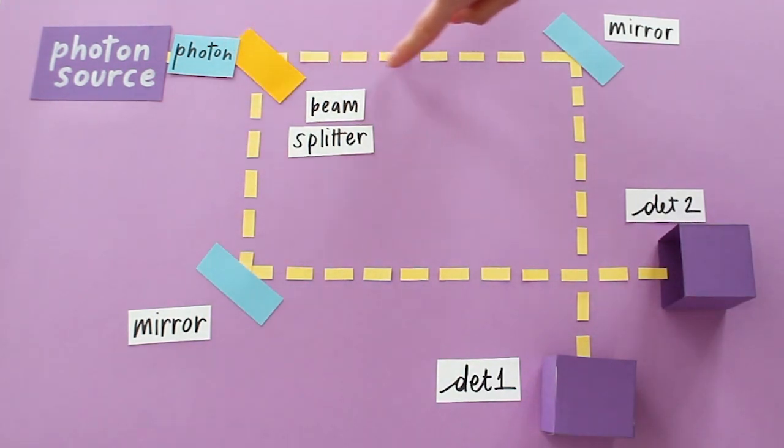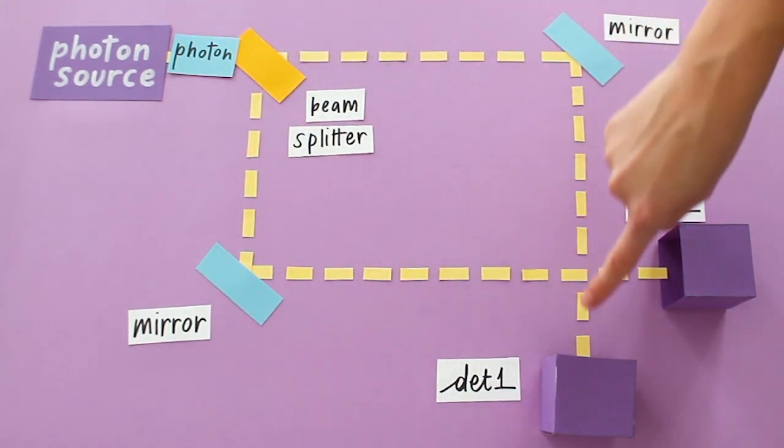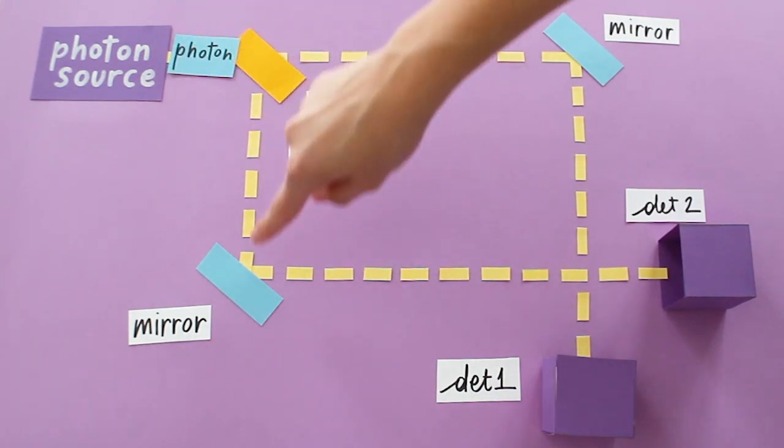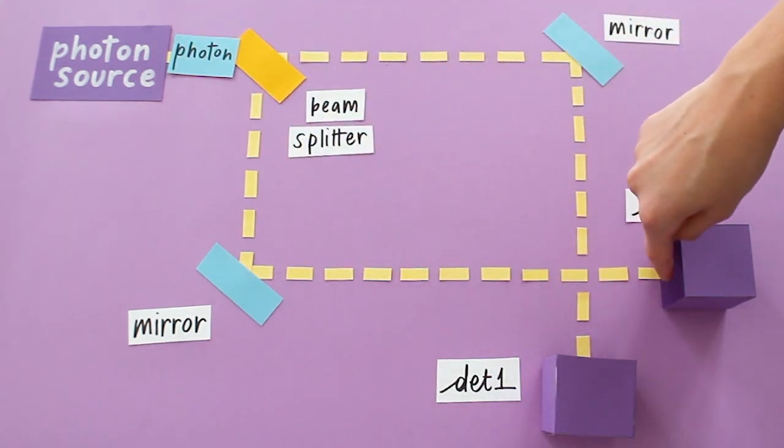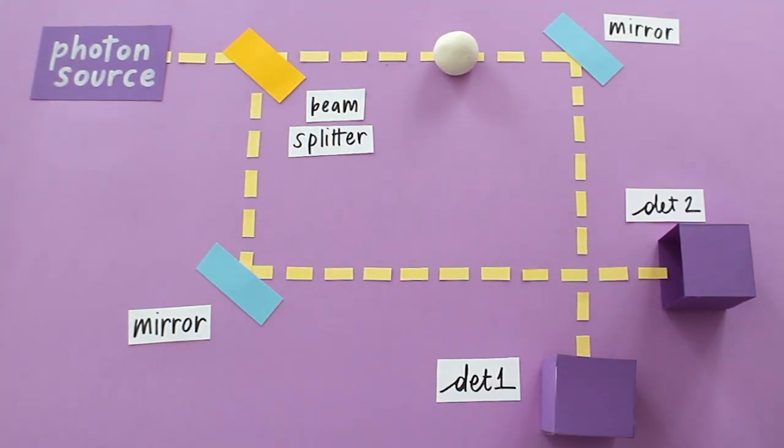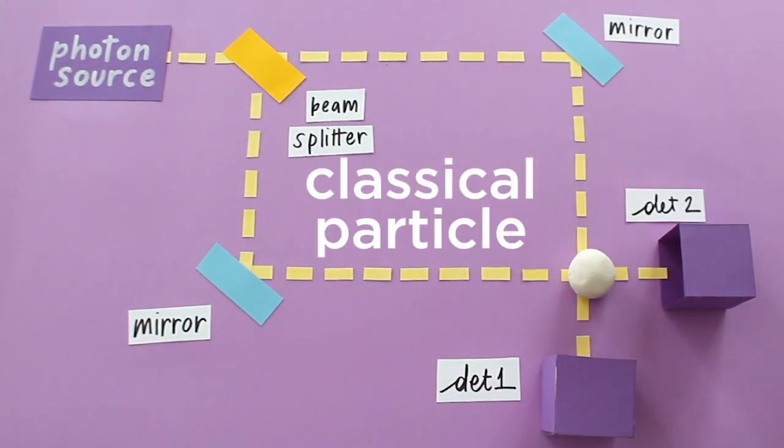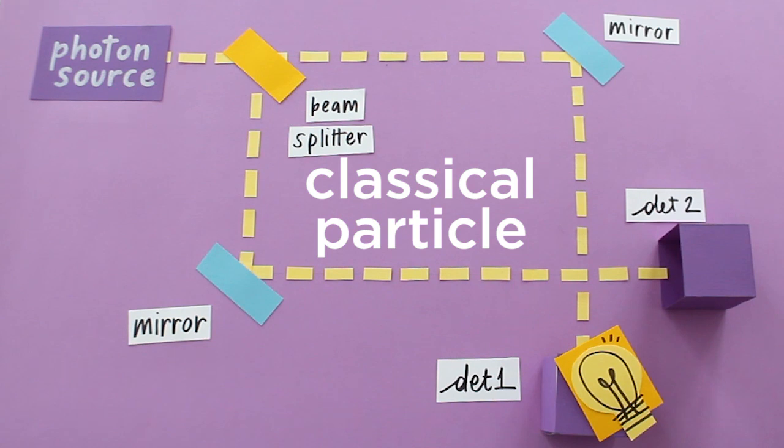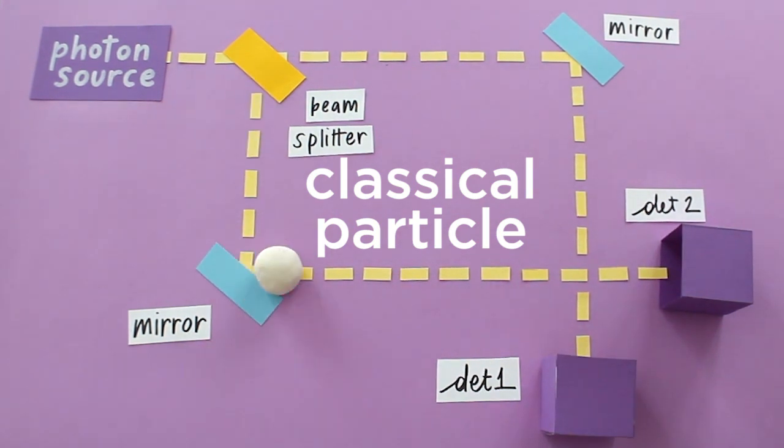We also know which path the photon takes. It can take the upper path of the apparatus and produce a click in detector 1, or it can take the bottom path and produce a click in detector 2. Without the recombining beam splitter, the photon seems to behave like a classical particle that cannot be divided into two, and that follows a specific path inside the interferometer.